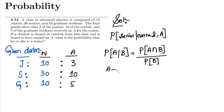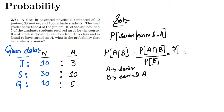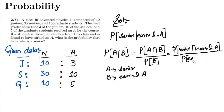Here, A is the event that a student is senior, and B is the event that he has earned an A. Therefore, we want to find the probability that he is senior and has earned an A.